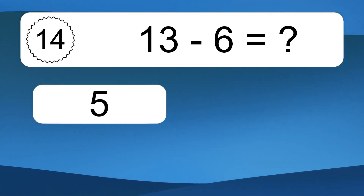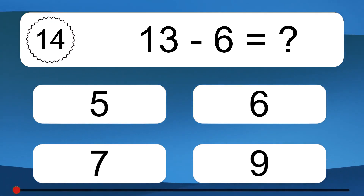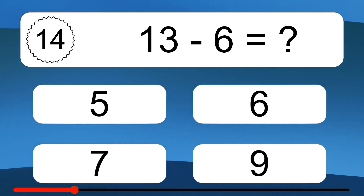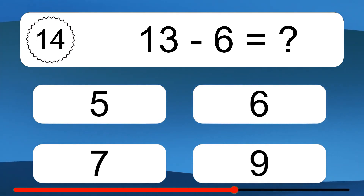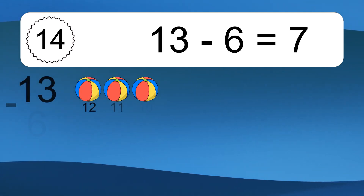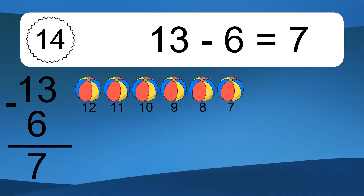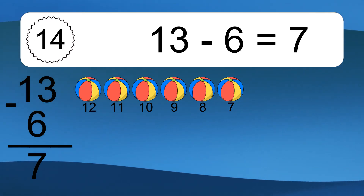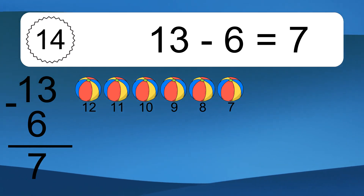13 minus 6 equals what? 13 minus 6 equals 7. Let's count it: 12, 11, 10, 9, 8, 7.